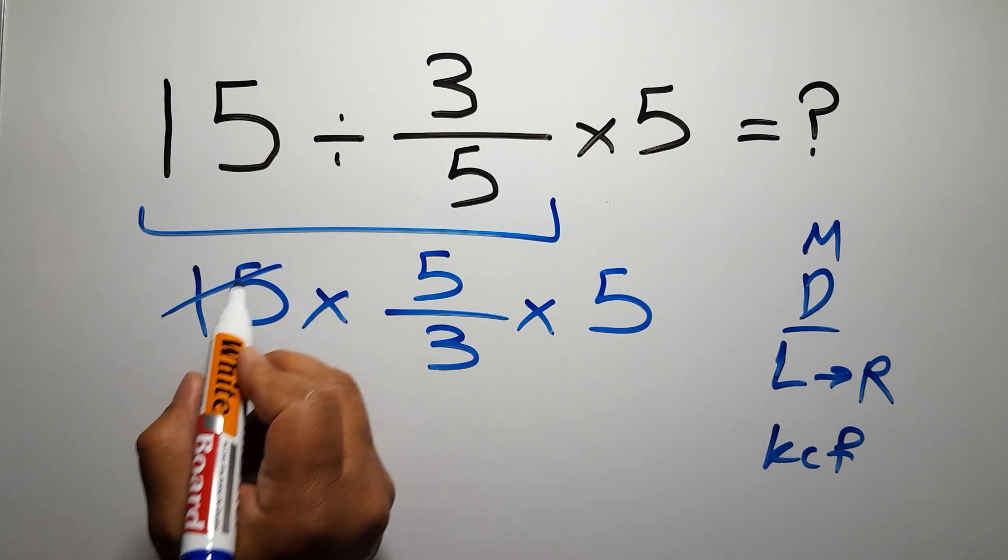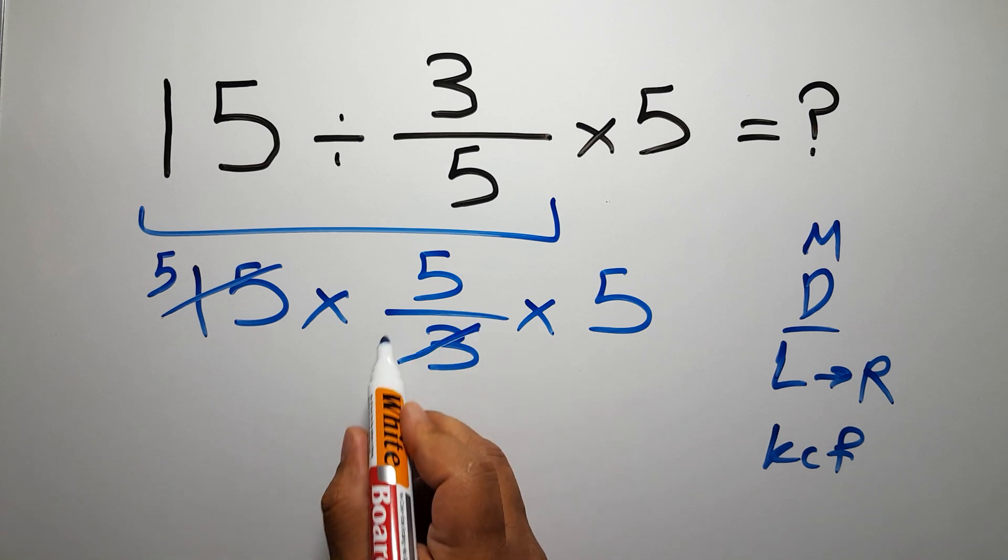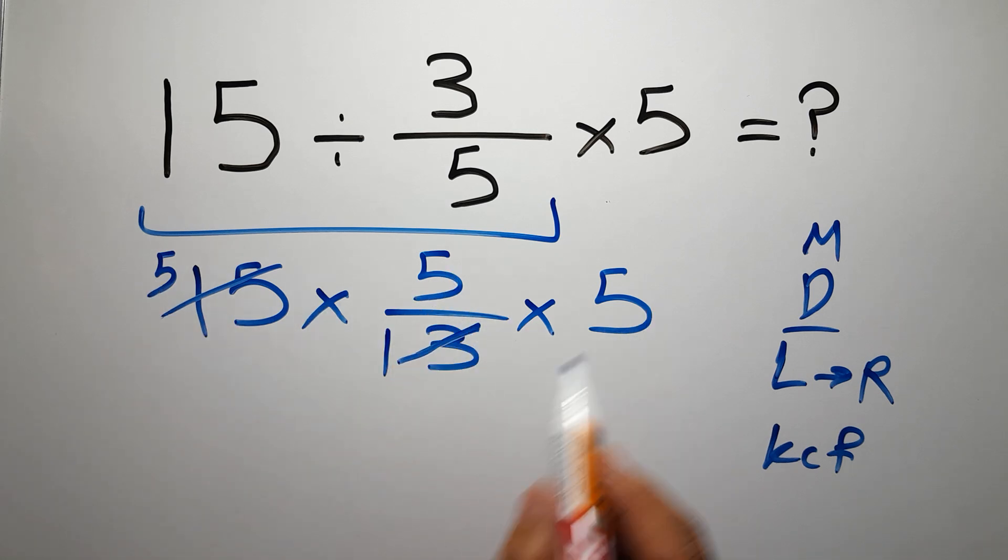15 divided by 3 gives us 5, and 3 divided by 3 equals 1. So we have 5 times 5 times 5.